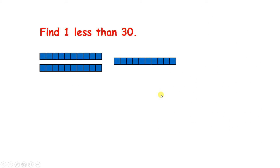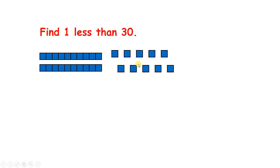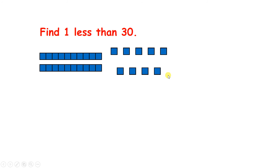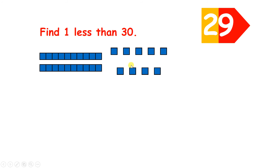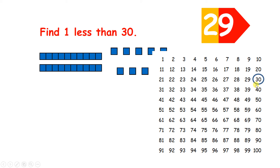One less than 30 — so we have 3 tens. Now if we break up one of our tens and take one away, we have 2 tens and 9 units, so we have 29. And on the 100 square, to find one less, we just move one place to the left.